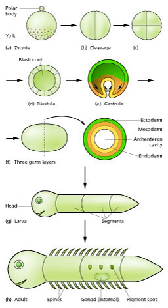Regional specification refers to the processes that create spatial pattern in a ball or sheet of initially similar cells. This generally involves the action of cytoplasmic determinants located within parts of the fertilized egg, and of inductive signals emitted from signaling centers in the embryo. The early stages do not generate functional differentiated cells, but cell populations committed to develop to a specific region or part of the organism, defined by specific combinations of transcription factors.